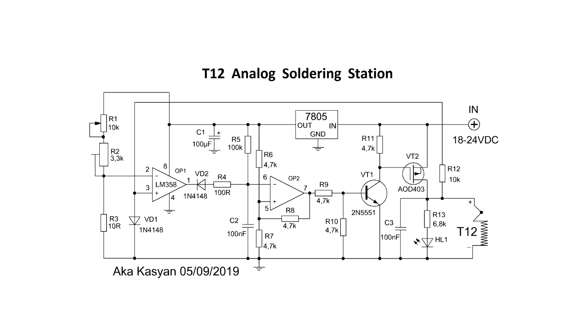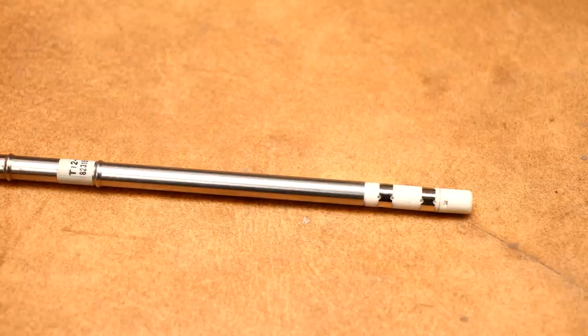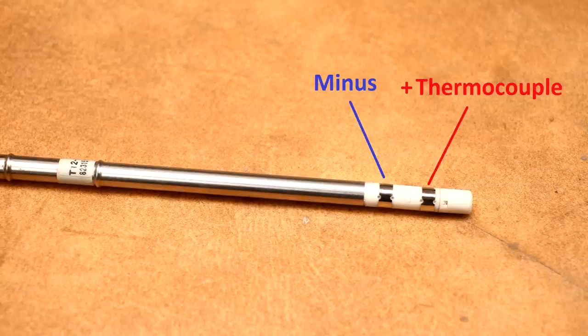In the T12 tips everything is different. There, the thermocouple is connected in series with a heater. As a result, we have two main pins, plus of the thermocouple and minus of the heater.